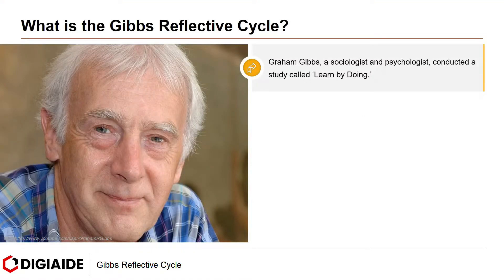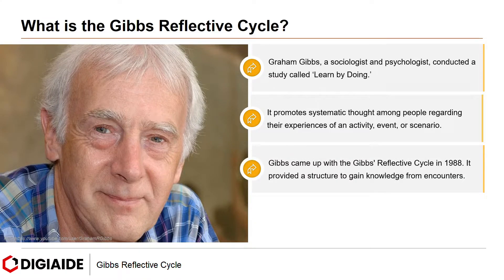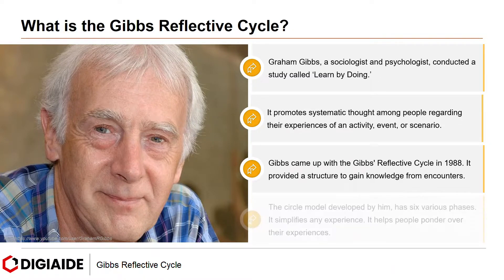Graham Gibbs, a sociologist and psychologist, conducted a study called Learn by Doing. It promotes systematic thought among people regarding their experiences of an activity, event, or scenario. Gibbs came up with the Gibbs Reflective Cycle in 1988. It provided a structure to gain knowledge from encounters.